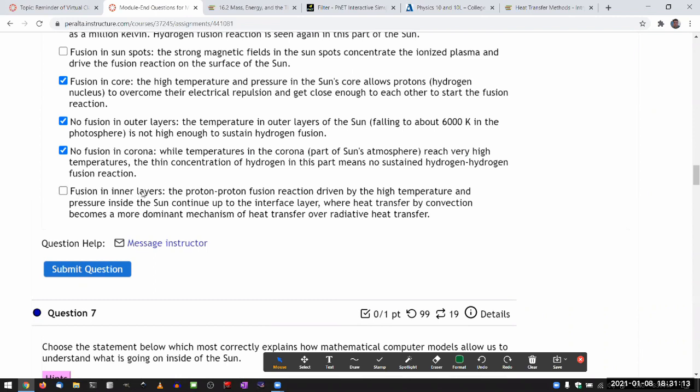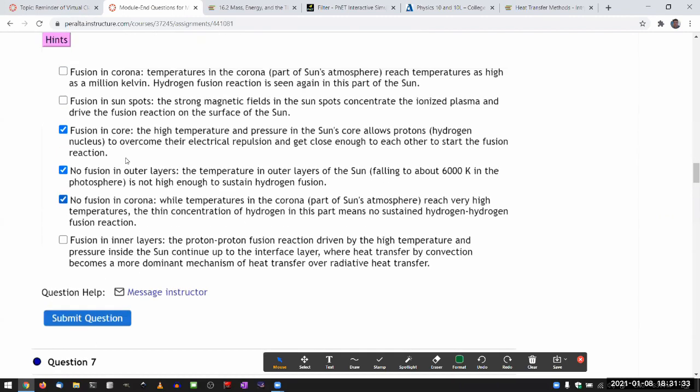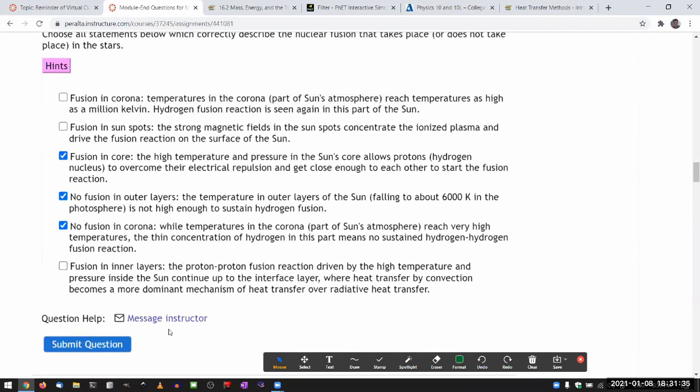Fusion in inner layers: this does happen once the sun gets to be in the red giant stage. But it doesn't continue up to interface layer. So these three descriptions are correct, the rest are not.